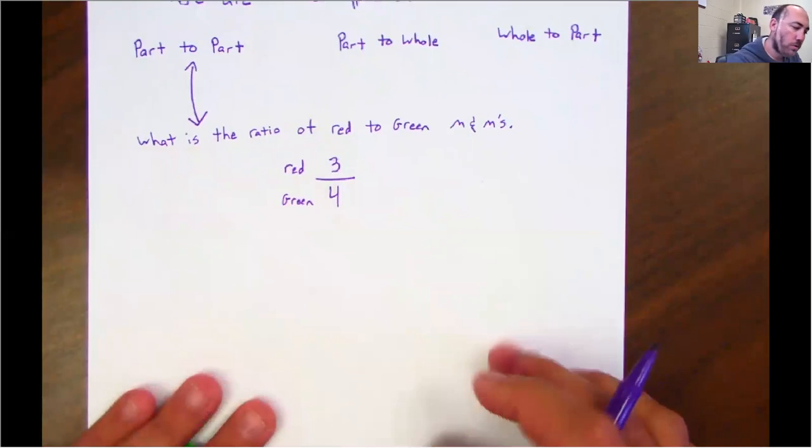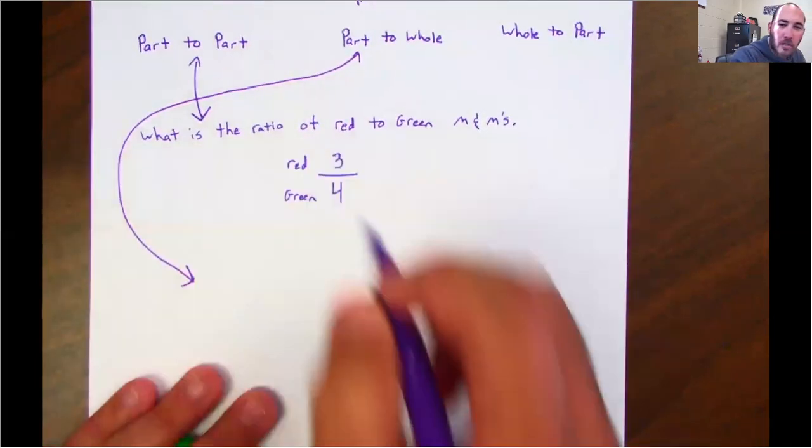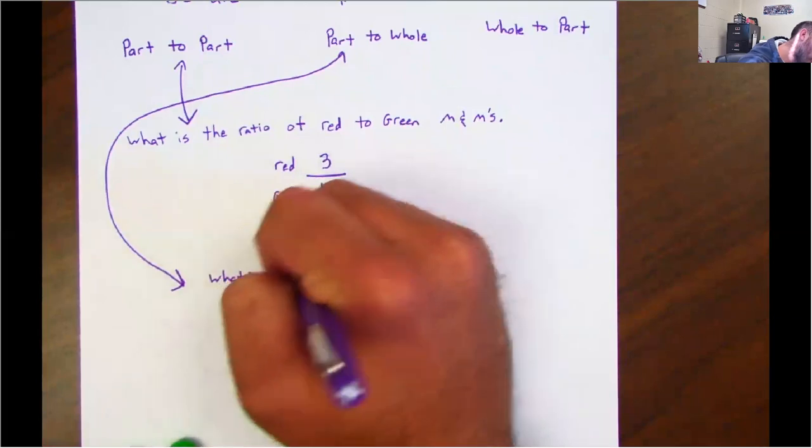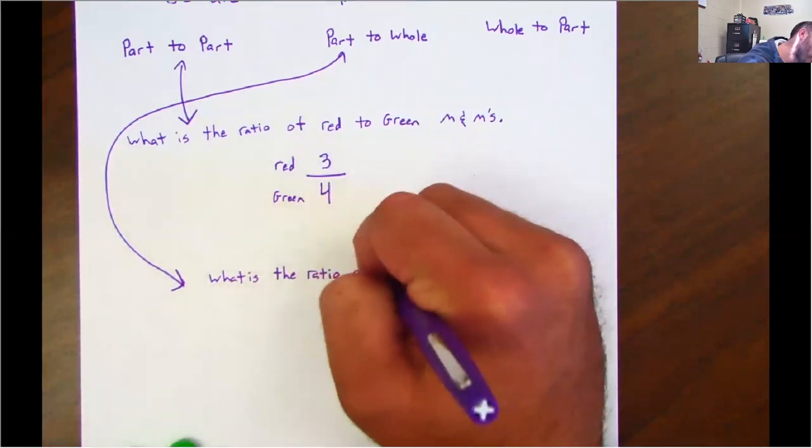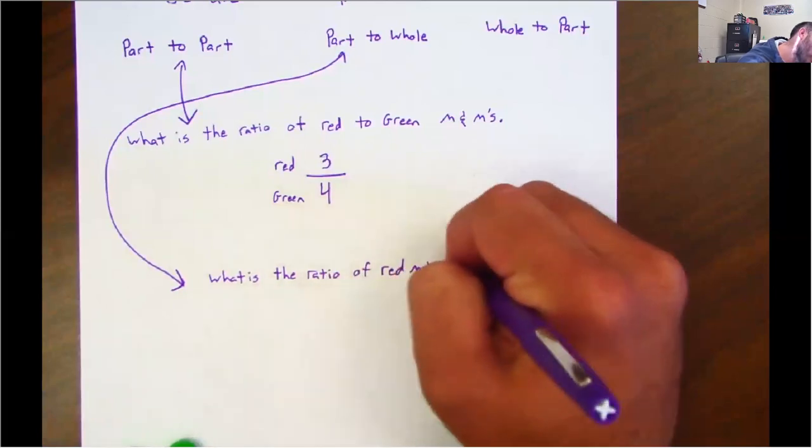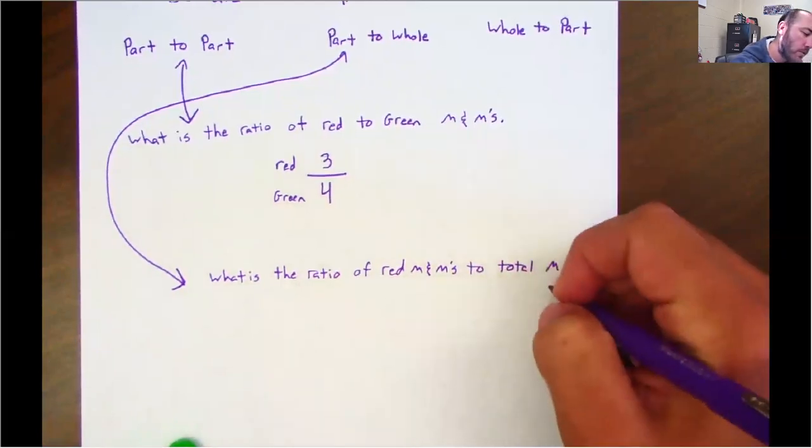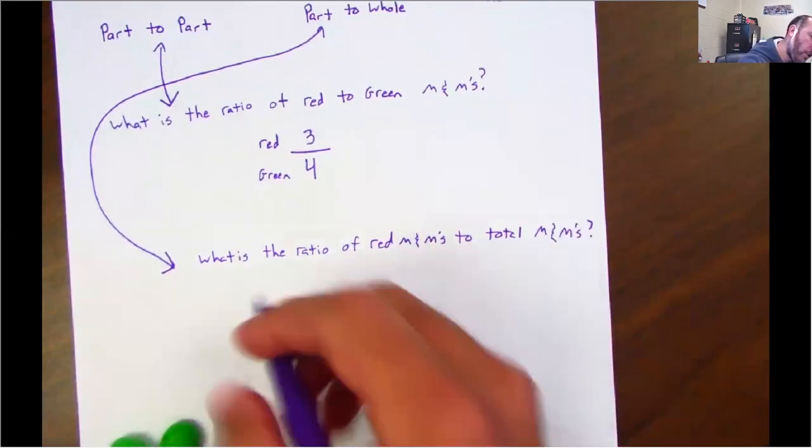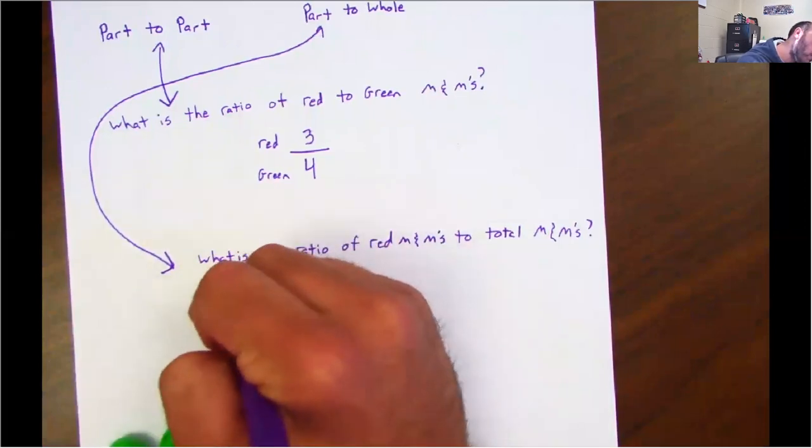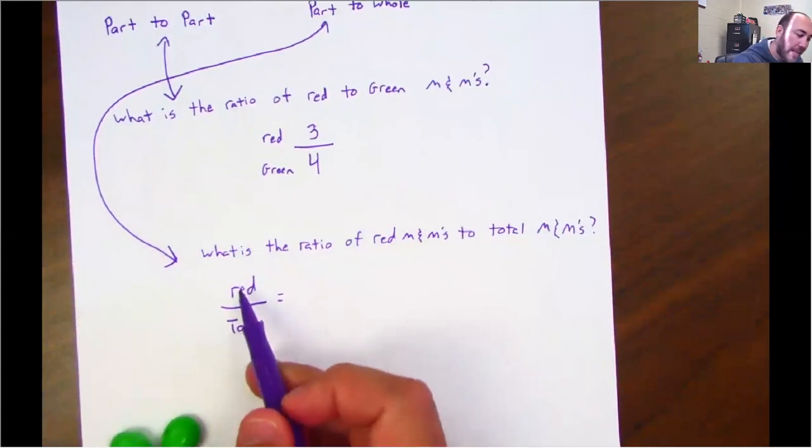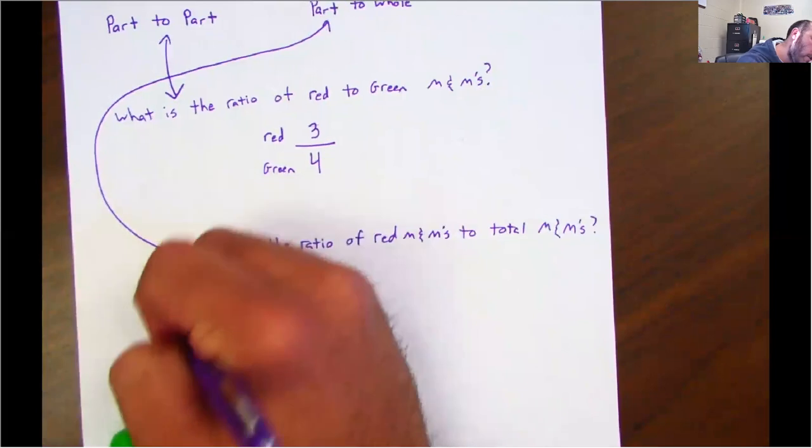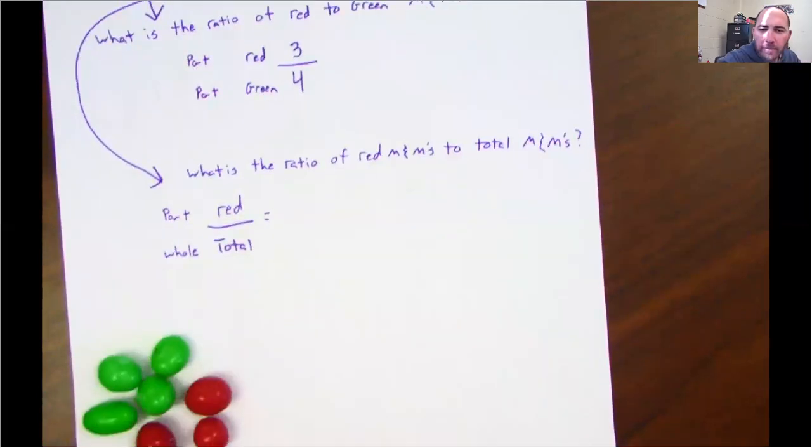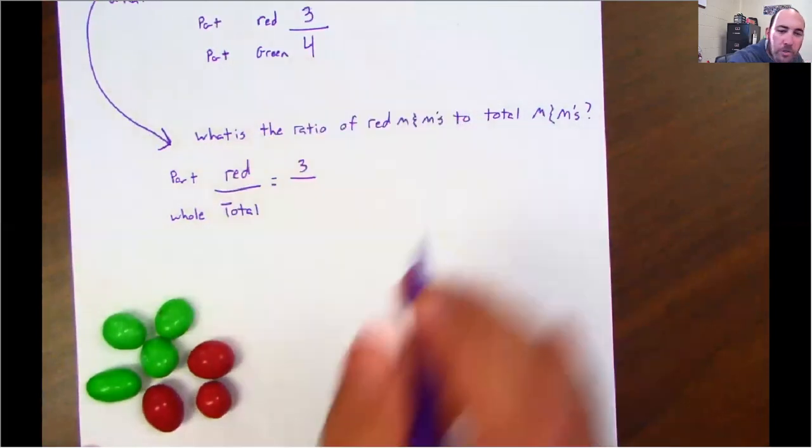Now let's do part to whole. What is the ratio of red M&Ms to total M&Ms? Well, here's my ratio. I'm comparing red to total. Now notice the red, that's your part. The total is your whole. That's how many there are. How many red M&Ms do we have? Three.